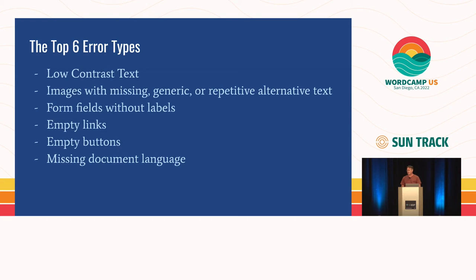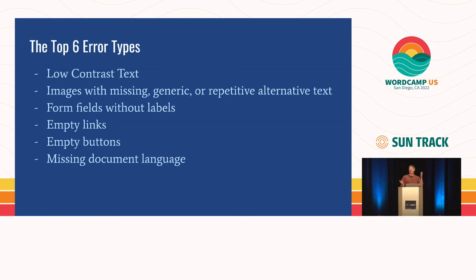Error number three: form fields without labels. This is amazingly common, partially because a lot of form fields use placeholders instead of labels. A placeholder is not a label — it doesn't do the same thing, it's not permanent, and it doesn't convey information in the same way. It's also because sometimes form fields have nearby text that tells you what the field is visually, but doesn't offer any of the benefits that a real associated label gives you.